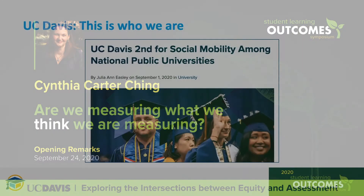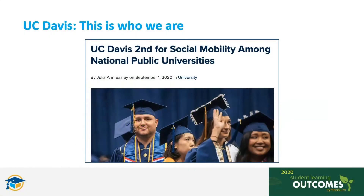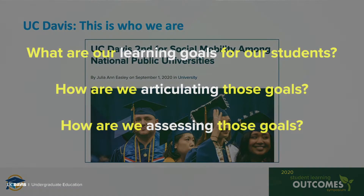One way of thinking about the relationship between student learning outcomes and equity is in terms of the big outcomes — the ones that transform students' lives, their prospects, their opportunities, their ability to take their rightful places as equal participants in our society and our economy. No matter which social mobility metric you look at, we seem to do a pretty good job at that, but students have to get here first, and once they're here, then they have to graduate in order for that to happen.